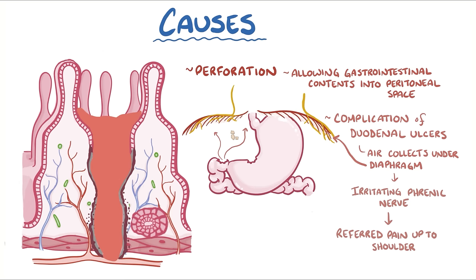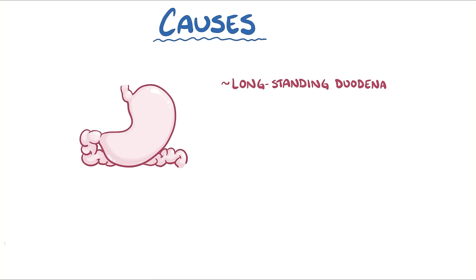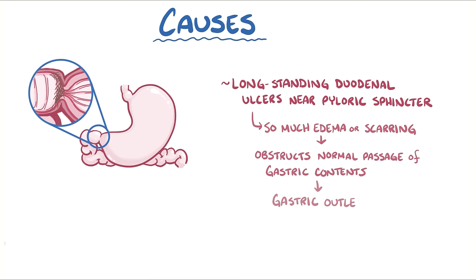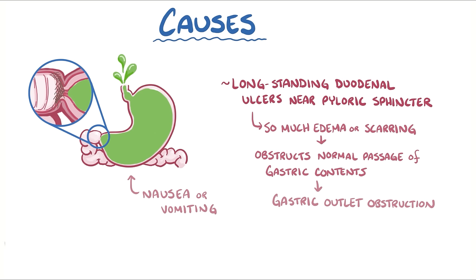Finally, and very rarely, long-standing duodenal ulcers near the pyloric sphincter can sometimes have so much edema or scarring that they obstruct the normal passage of gastric contents into the intestines, resulting in gastric outlet obstruction. This can quickly lead to nausea or vomiting since the food literally can't get by.